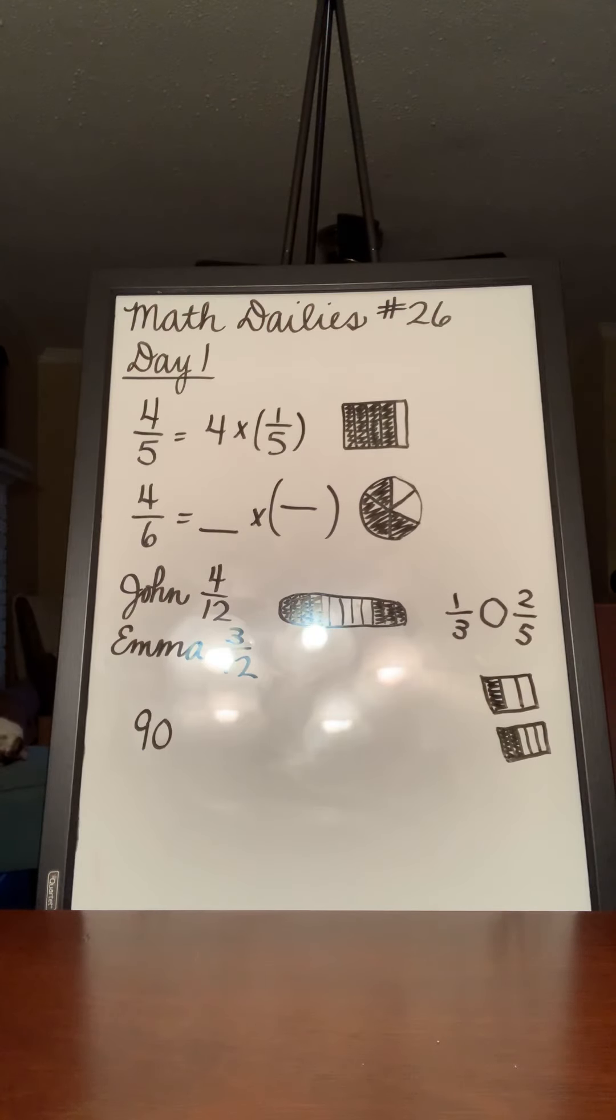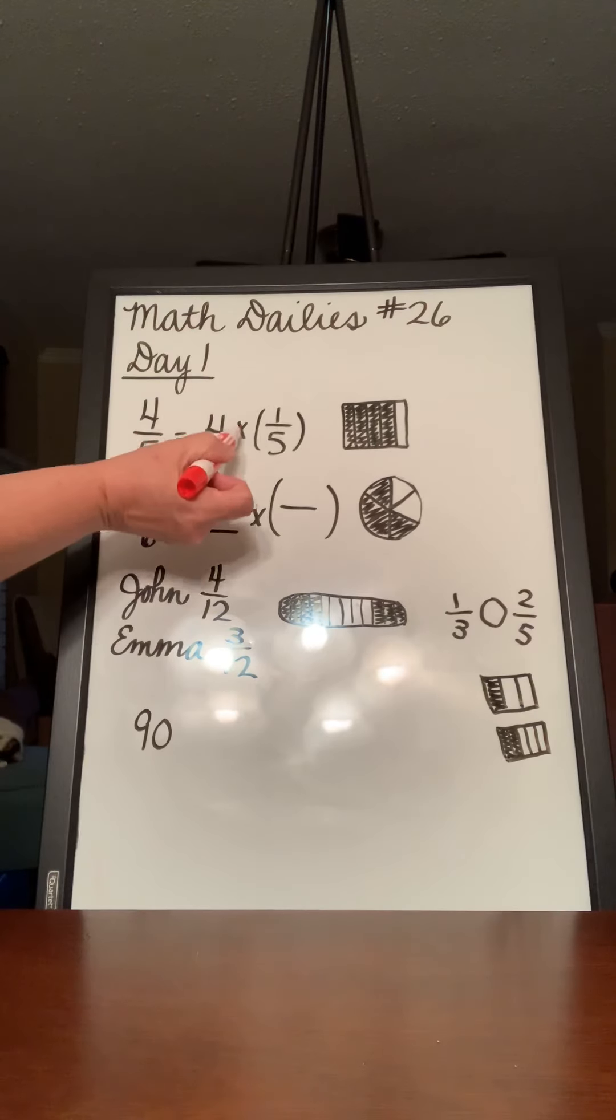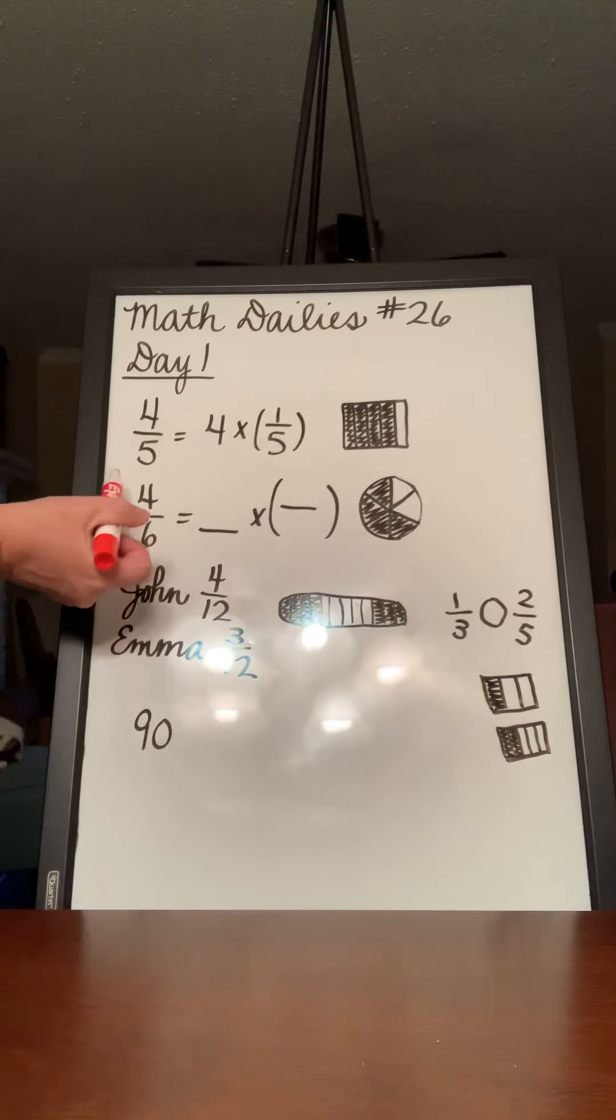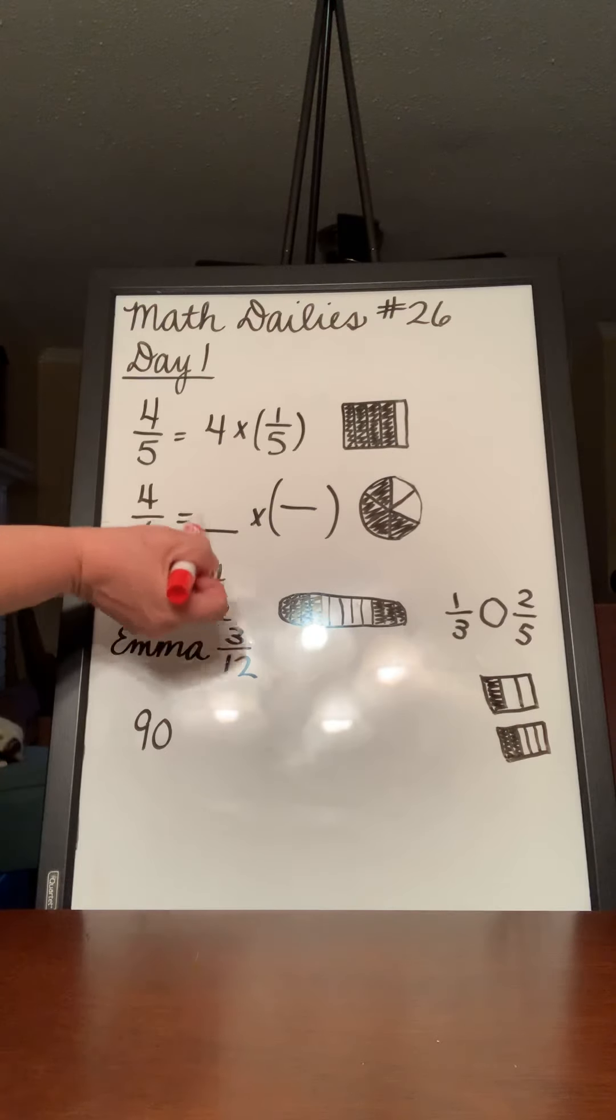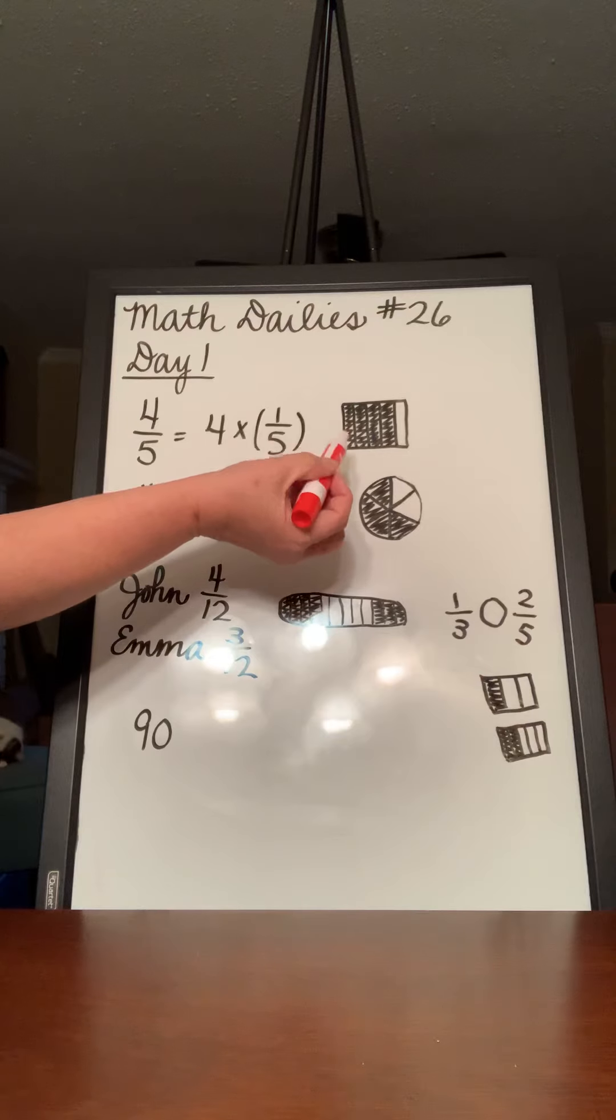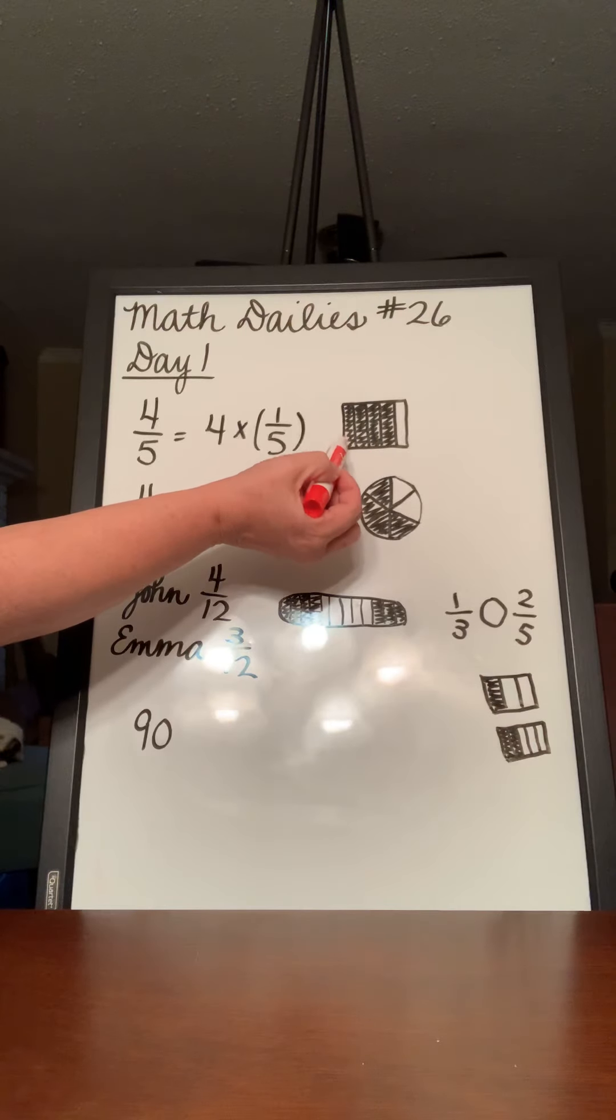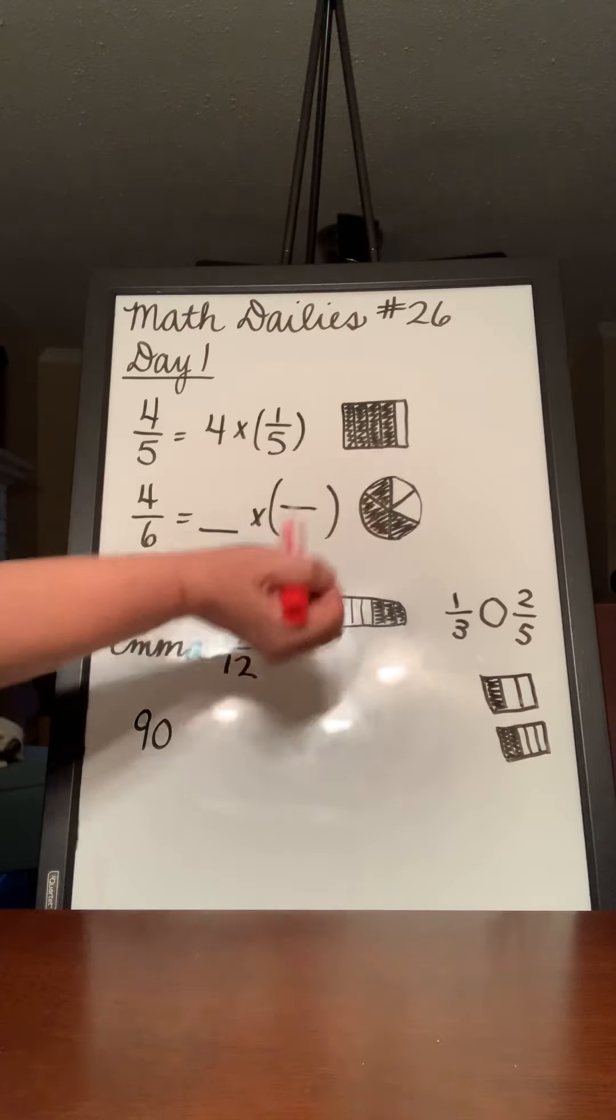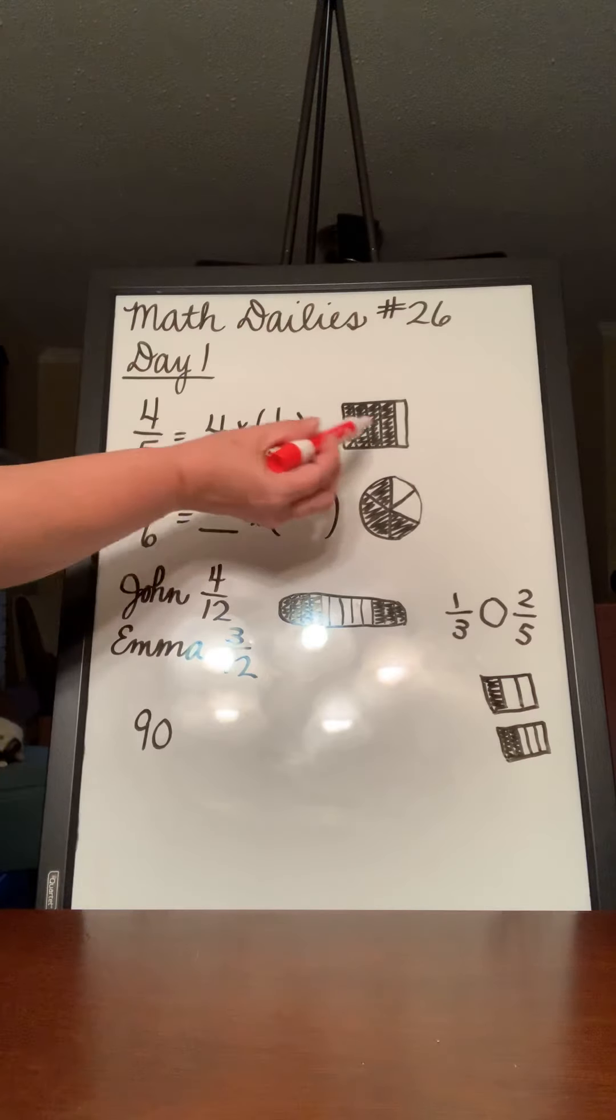If you look in box 1, you will see something that's a little bit new for us. It says that if 4 fifths equals 4 times 1 fifth, then 4 sixths equals... and it's got these blanks for you. Well, I drew a picture just to help us out. This is 4 fifths right here, 4 out of 5.